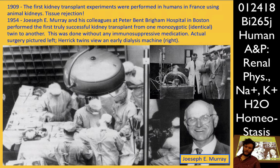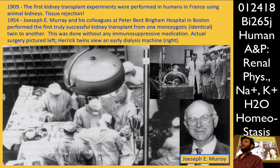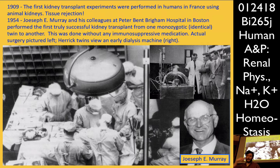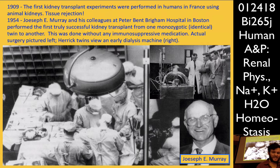Tissue rejection happens because of the major histocompatibility complex. Cells that are self have antigens presented on MHC platforms on the surface that the immune system can recognize as self or not self. If it doesn't recognize it as self, it gets destroyed. In 1954, Joseph Murray performed the first successful kidney transplant. The way this worked was he used monozygotic kidneys — meaning he had identical twins, the Herrick twins.